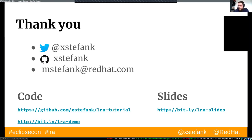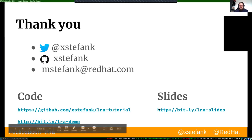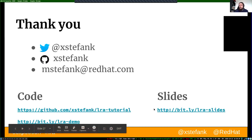Q: How does LRA handle a service or coordinator going down unexpectedly? The coordinator is based on the Narayana/Arjuna JTA implementation — if the coordinator goes down, everything is persisted in an object store (durable log storage), and when it restarts it reads from that store. In your services you shouldn't hold any state — just annotate your methods and the coordinator persists and can call the URLs of those methods. The coordinator collects service endpoint URLs dynamically from the annotations. All slides are available at the provided URL and I also created an LRA tutorial if you want to explore further.